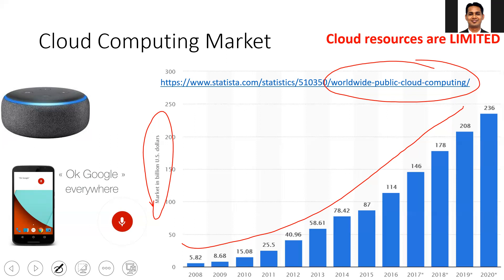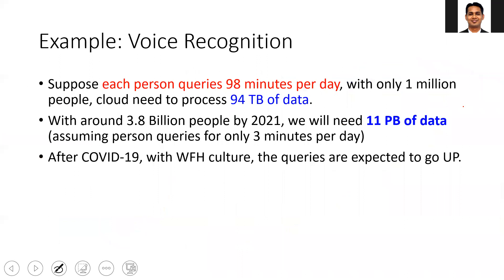The cloud resources are limited. You can buy a large number of these devices, but all of them are going to demand more resources from the cloud. For example, suppose we use Alexa or Google devices and there are only 1 million people using these devices around 98 minutes per day — this means they are going to send around 94 TB of data. So we need communication bandwidth and cloud resources to process this large amount of data.